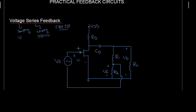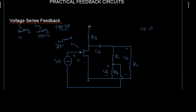We have this voltage series feedback circuit where we have the N-channel JFET. Now when we do not have feedback, that is when Vf is equal to zero, we perform the AC analysis. For AC analysis, I am going to take the DC sources as ground, and this capacitor is going to be replaced by a short circuit.